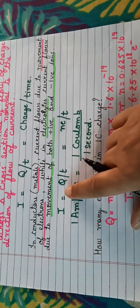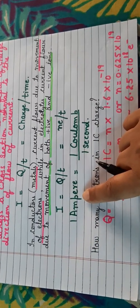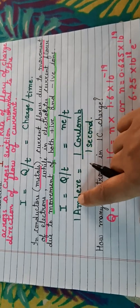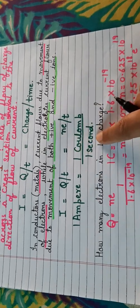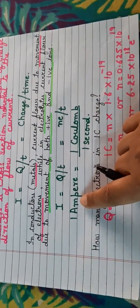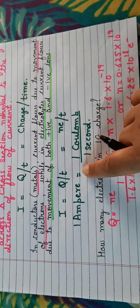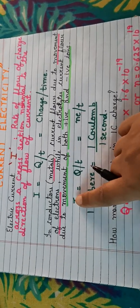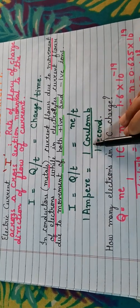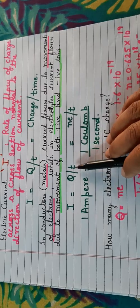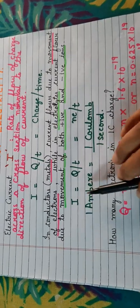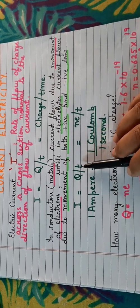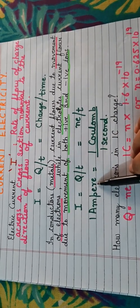Now let us look at the SI unit of current. The SI unit of current is ampere, the unit for charge is coulomb, and for time is second. So 1 ampere = 1 coulomb / 1 second. We define 1 ampere as: current is said to be 1 ampere when a charge of 1 coulomb flows through a conductor in time 1 second.